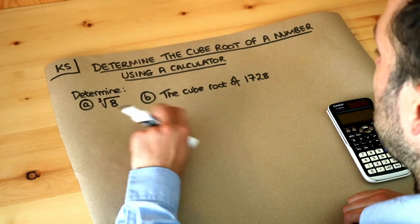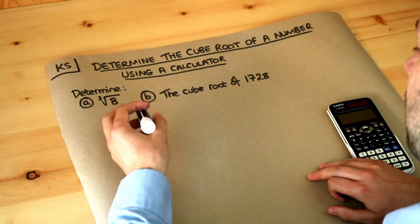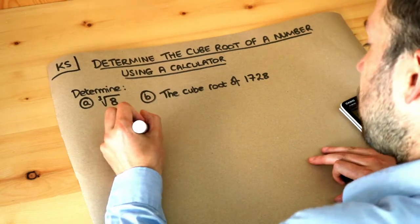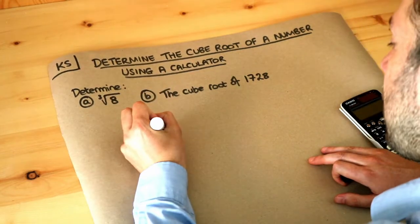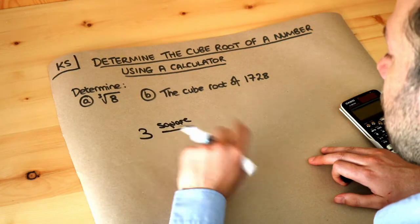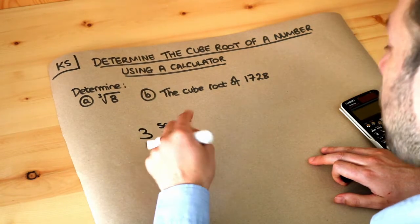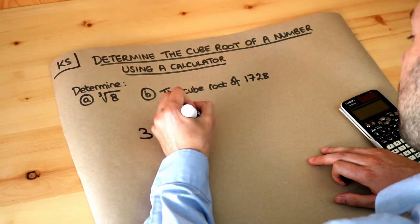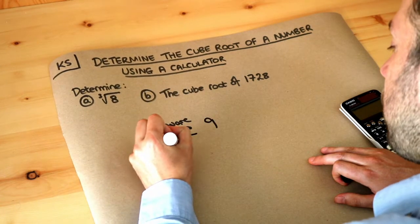In the previous video we saw the idea of square root. So for example, if we started with 3 and we squared it, 3 squared means 3 multiplied by itself, so that will give you 9. And the opposite was known as the square root.